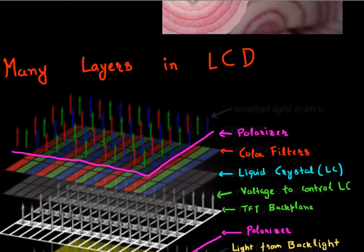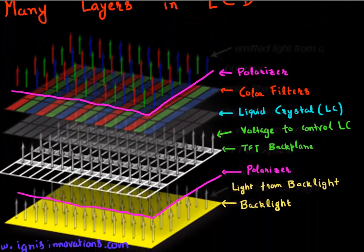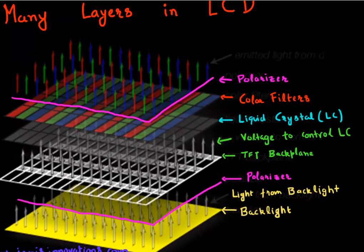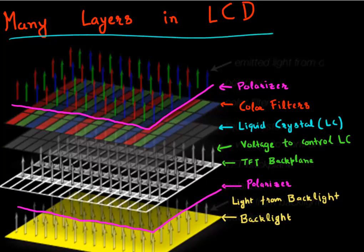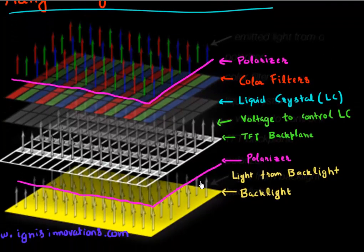Shown here is a cross-section picture which shows the multiple layers in a liquid crystal display. And as you can just see over here, there are layers and layers of things, and each of them is doing something or achieving a particular function that is enabling this display.